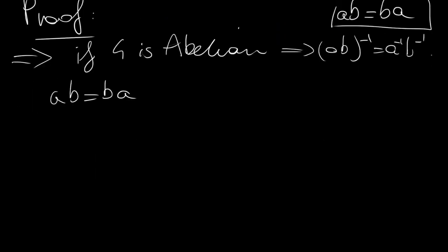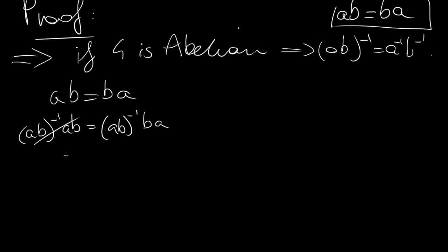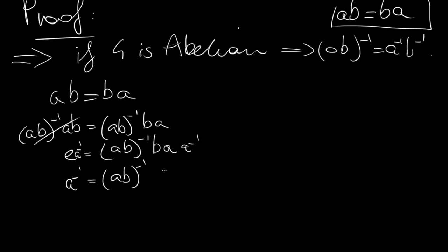Let's manipulate and see where it leads. We start by multiplying on the left by (AB)⁻¹: (AB)⁻¹ times AB equals (AB)⁻¹ times BA. The left side gives the identity. The right side gives (AB)⁻¹ · B · A. Now we multiply both sides by A⁻¹ on the right, giving A⁻¹ equals (AB)⁻¹ · B, since those two A's are inverses and cancel, leaving B times identity equals B.